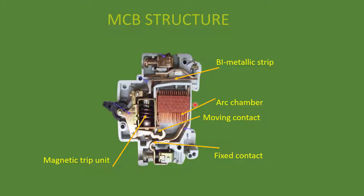The other part is the arc chamber. The arc chamber is the arc extinguishing mechanism. Due to the sudden disconnection of contacts, an arc is produced because of the ionization of air, and we have to extinguish this arc. The arc chamber divides the arc into small portions — you can see different small chambers inside the arc chamber. As the arc passes through these chambers it is divided into small portions, loses its power and force, and is extinguished.